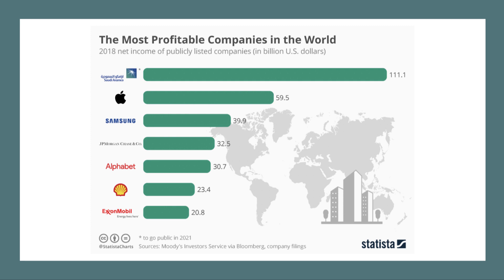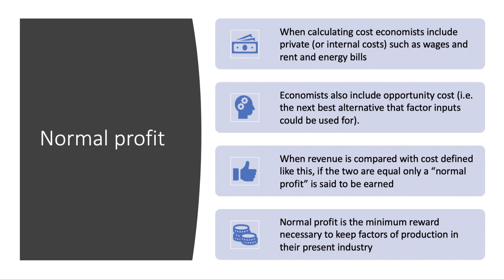Samsung is third in the list. Alphabet, of course, is Google. Then Shell and Exxon. Cheater 2 just missed off this chart, sadly, this year.